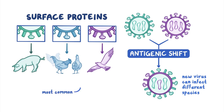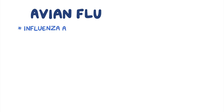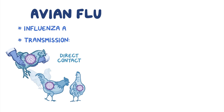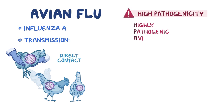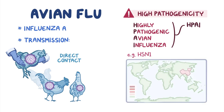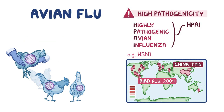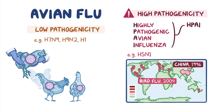The most common types of zoonotic influenzas are avian, meaning originating from birds, and swine, meaning originating from pigs. Avian flu is caused entirely by influenza A virus, and transmission is often through direct contact with infected poultry as the birds are slaughtered or plucked. Based on pathogenicity, avian influenza is divided into high pathogenicity or low pathogenicity. The greatest risk is highly pathogenic avian influenza, or HPAI. The most well-known HPAI strain is H5N1, which first appeared in China in 1996 and was responsible for the bird flu outbreak in 2004. Other low pathogenic avian influenza viruses include H7N9, H9N2, and most recently H10N8.